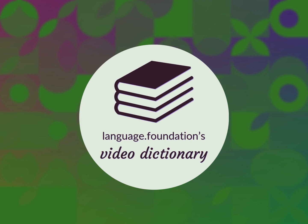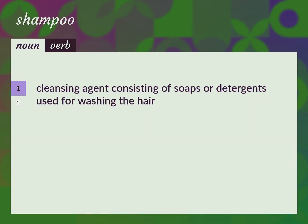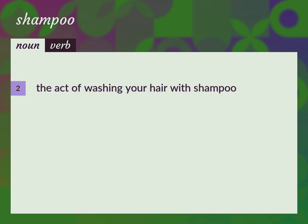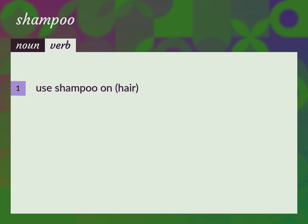Language.Foundation's Video Dictionary, helping you achieve understanding. Shampoo: a cleansing agent consisting of soaps or detergents used for washing the hair. The act of washing your hair with shampoo. As a verb: to use shampoo on hair.